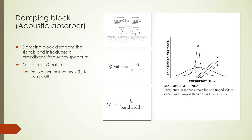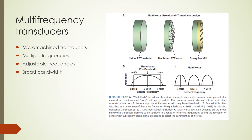A damping block layered on the back of the piezoelectric element absorbs the backward-directed ultrasound energy and attenuates stray ultrasound signals from the housing. Damping is important because ultrasound transducers used in diagnostic imaging must produce short ultrasound pulses and respond to returning echoes over a wide range of frequencies. Damping introduces a wide bandwidth that allows the transducer to receive a wide range of frequencies. The ability of the transducer to operate over different bandwidths is determined by a quality or Q factor — a wider bandwidth means a lower Q factor.